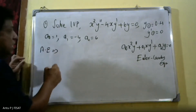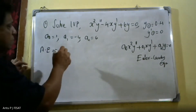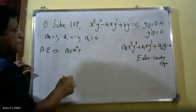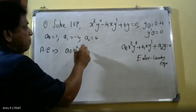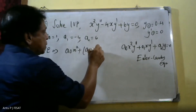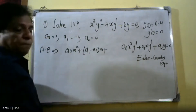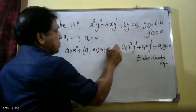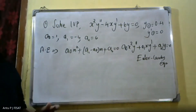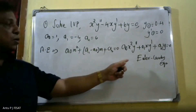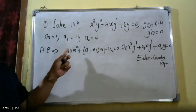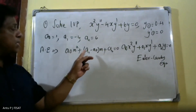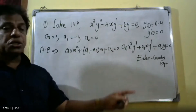We know that the auxiliary equation is: a₀m² + (a₁ − a₀)m + a₂ = 0. This is the auxiliary equation form for Euler-Cauchy equations.